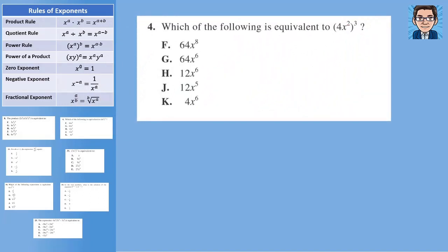On the second problem, we are raising to a power, so we multiply exponents. The x value becomes x to the sixth. The four is also inside the parentheses, so the four also needs to be raised to the third power. Notice the answers include four not raised to a power, or 12 if you mistakenly multiplied four times three. Four is not an exponent — it's a number being raised to the third power, so four to the third is 64. Our final answer is G: 64x to the sixth.